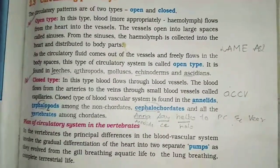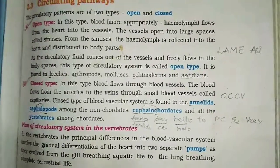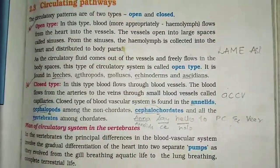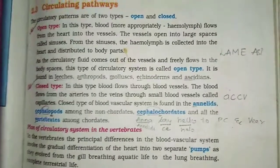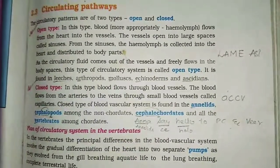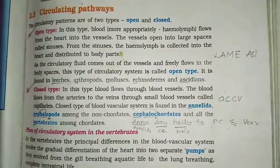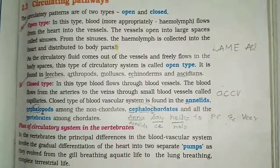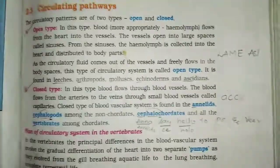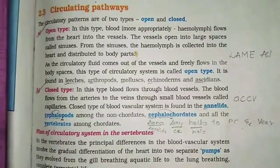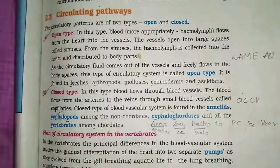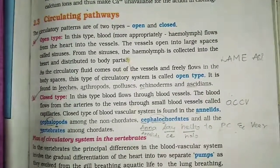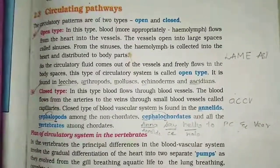For closed type of blood circulatory system, one trick is to remember it in a rhyming way: Annelids, Cephalochordates, Hemichordates, Vertebrates. Another trick is 'Anna say hello to PC' — where Anna is for Annelids, 'say' is for CE, 'hello' is for Hallo, and PC stands for the two words starting with Cephalo: Cephalochordates and Hemichordates. Then Vertebrates, which we remember that way.